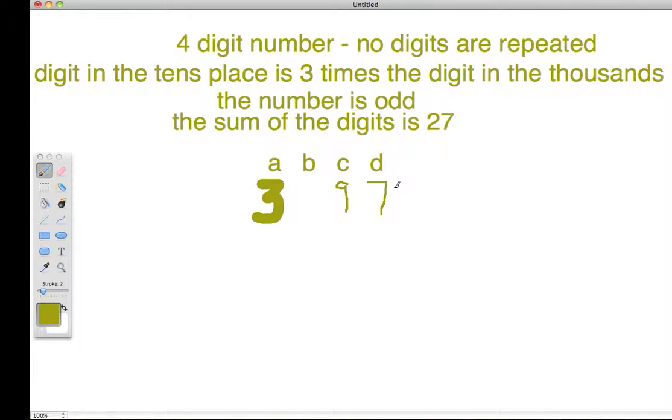Well, 3 plus 7 is 10. This is 19, and that means in order to make the sum of the digits 27, this digit has to be 8. So, here's the number that satisfies all our conditions. It's 3,897. Right there. That's the answer.